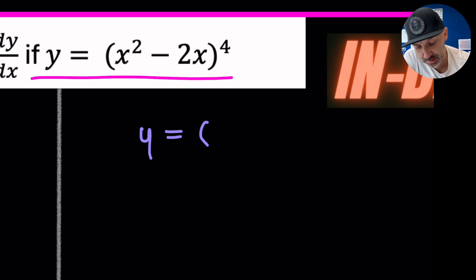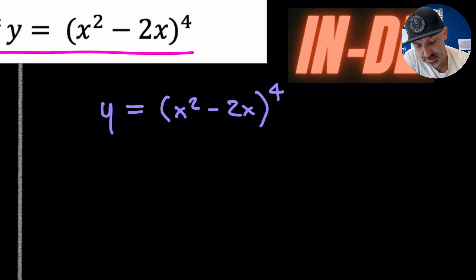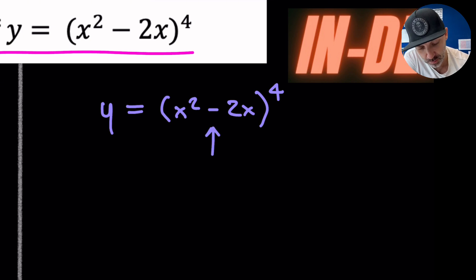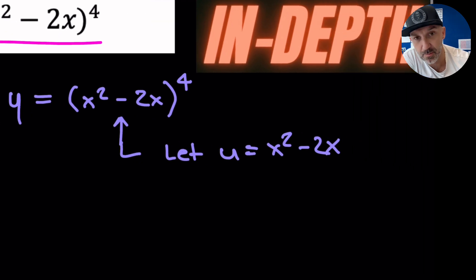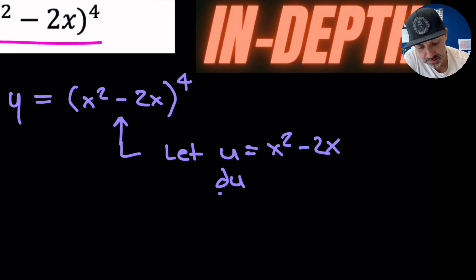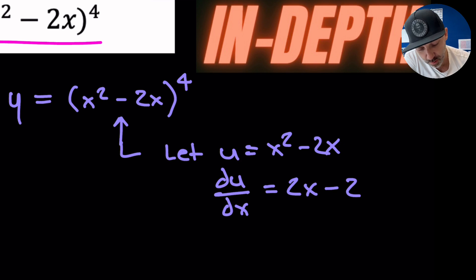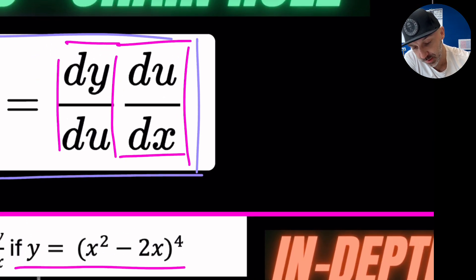If we let y equal (x² − 2x) to the power of 4, the chain rule states that the inner expression can be defined as a function of u. So we let u equal x² − 2x. We can then differentiate u with respect to x using the simple power rule: du/dx is equal to 2x − 2. We will need du/dx as part of the chain rule expression.